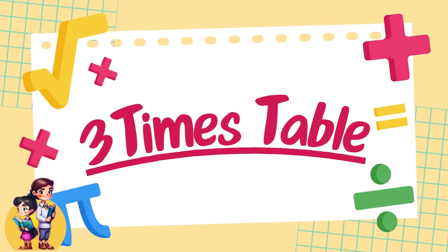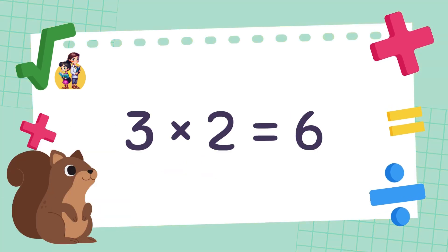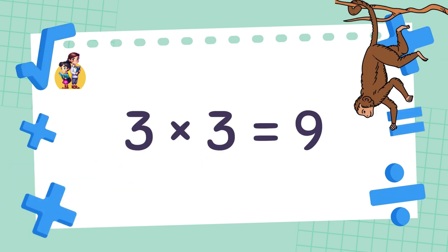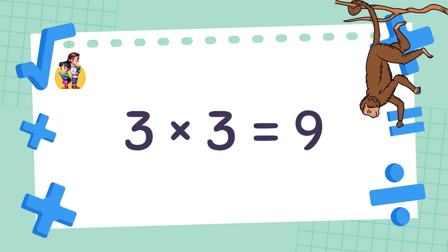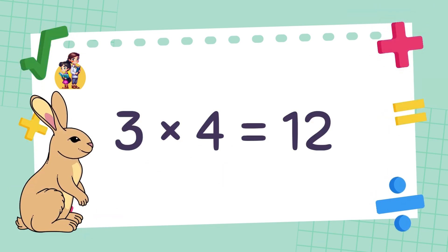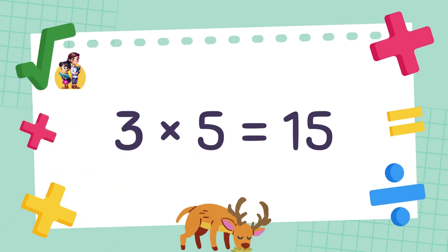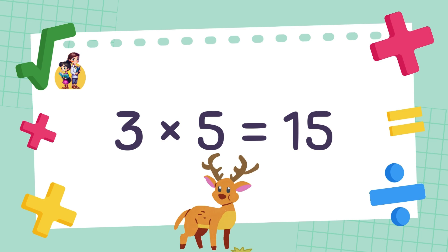Let's learn 3 times table. 3 times 1 is equal to 3. 3 times 2 is equal to 6. 3 times 3 is equal to 9. 3 times 4 is equal to 12. 3 times 5 is equal to 15.